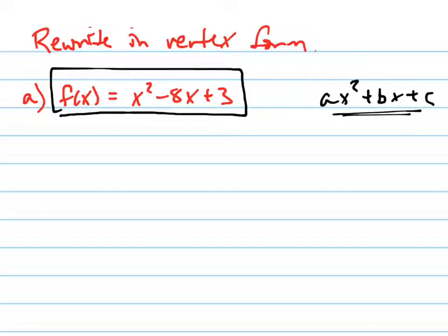So there's several ways you can do this process, but the most straightforward way and the way that is the most important for your future is called completing the square. We're going to complete the square, and I'll tell you why it's called completing the square in a minute, but I'm just going to show you how you do that.